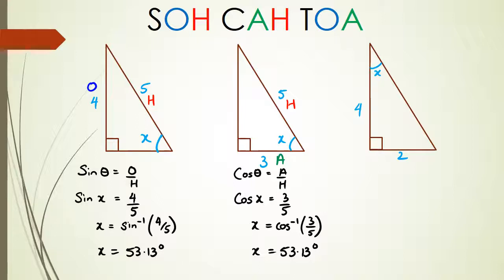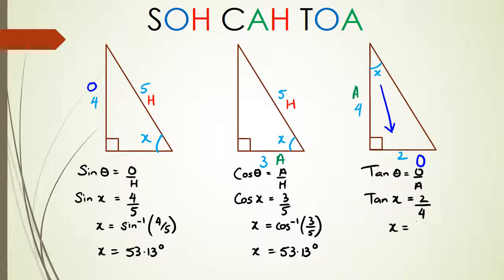The next question has no hypotenuse - we have a side that's opposite and 4 which is adjacent, so we're using tan. We get tan θ = opposite over adjacent. θ is x, opposite is 2, adjacent is 4, so x = inverse tan of 2/4, which equals 26.57 degrees. That's the summary of those three question types.